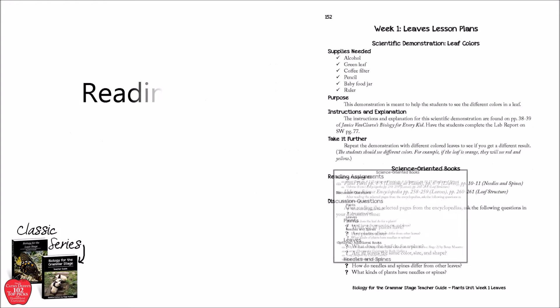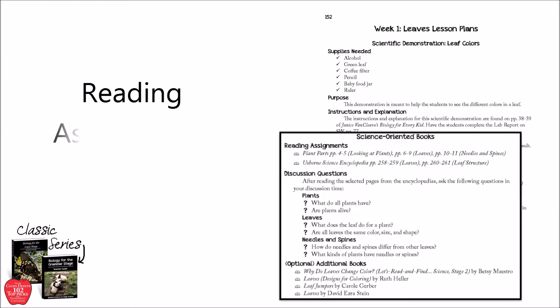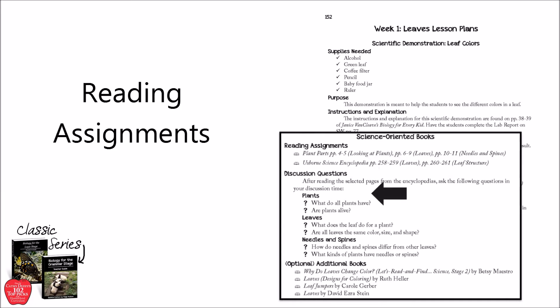Next, you will see the science-oriented books section with two options for spines — one for younger elementary students and one for older students. These scheduled pages will be followed by suggested discussion questions and optional additional books you can get from your local library.